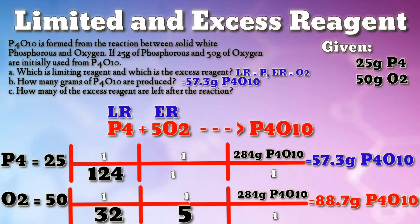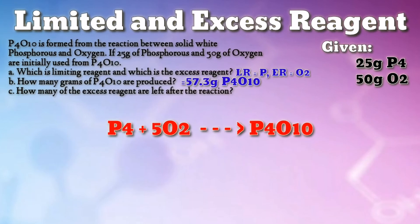That will be the answer for letter B. When this amount of tetraphosphorus decoxide is produced, the reaction will stop, leaving an amount of the excess reactant — oxygen gas — unreacted. Third step: to know the amount of excess reagent left after the reaction, to answer letter C, compute the amount of the excess reagent that is actually used based on the amount of the limiting reagent. Then subtract the actual amount of excess reagent used from the initial amount given. Now let's compute the amount of oxygen gas that will react with the limiting reagent, which is phosphorus.